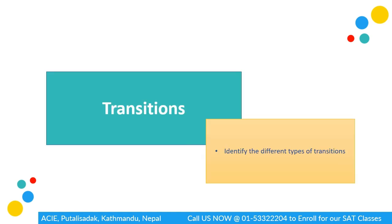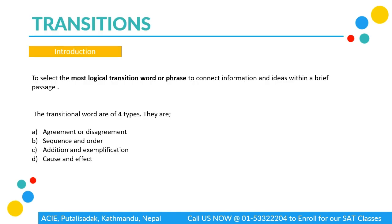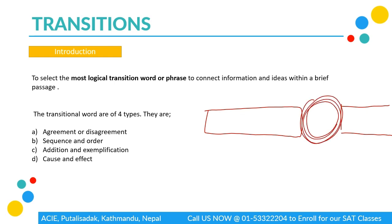Our first topic of the day is transitions, where we find the most suitable transitional word for a given question. A transitional word is any word used between two different sentences to connect them — transitioning one sentence to another, and also transitioning between two similar or two different ideas. Altogether, we have four types of transitional words: agreement or disagreement, sequence and order, addition and exemplification, and cause and effect.